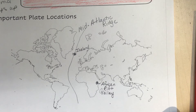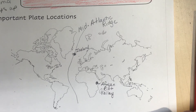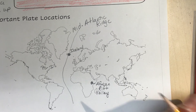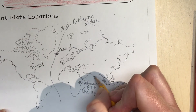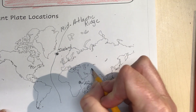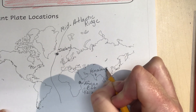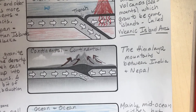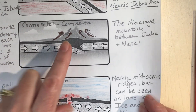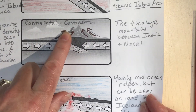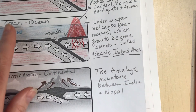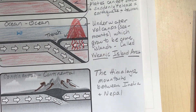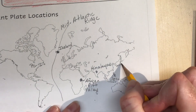Now let's talk about convergent plate boundaries where two plates are smashing into each other. One is the Himalayas — at the top of India, between India and Nepal. That's the continental-continental type of convergent boundary. The oceanic-oceanic ones include Japan and the Aleutian Islands. Japan is a volcanic island arc.